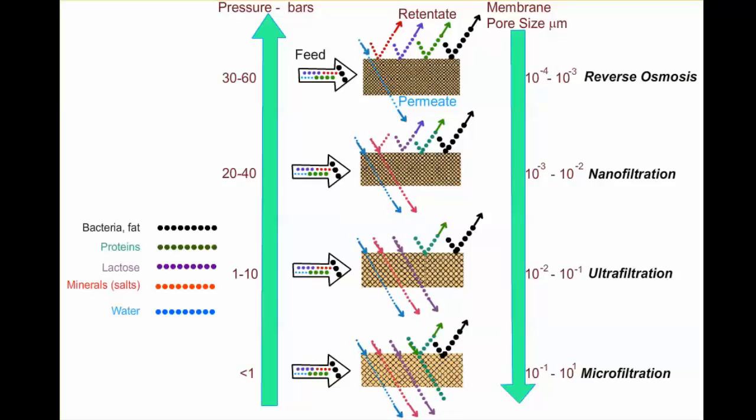Now, in this animation, we see that these membrane systems have selective separation of feed components. For example, if you have milk containing water, minerals, lactose, proteins, fat, and bacteria...